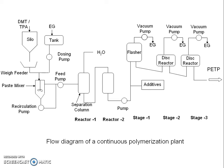As seen in the flow diagram for continuous polymerization of polyester: DMT from a silo is weighed and fed continuously to a paste mixer. Simultaneously, MEG from a tank is fed via a dosing pump to the mixer. Both are mixed intensively with a stirrer and further homogenized with a recirculation pump.